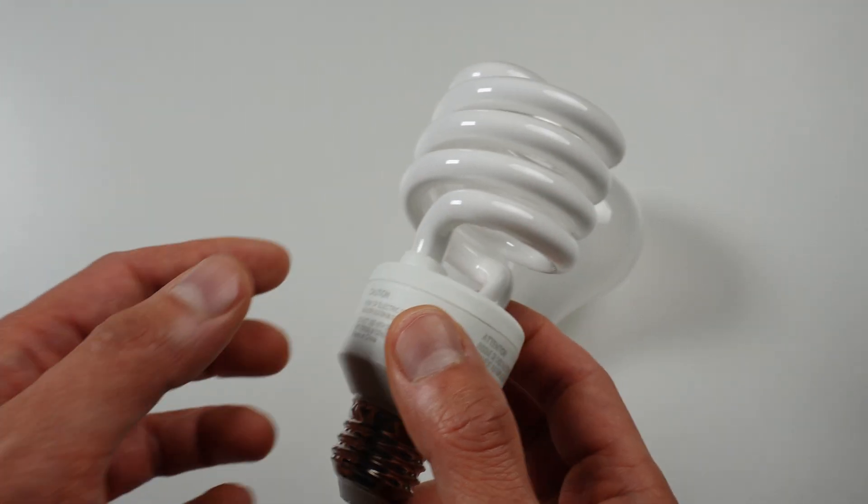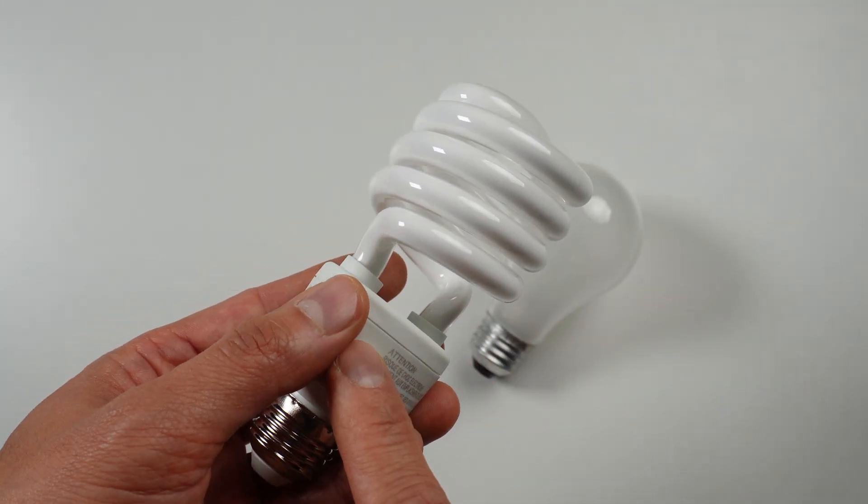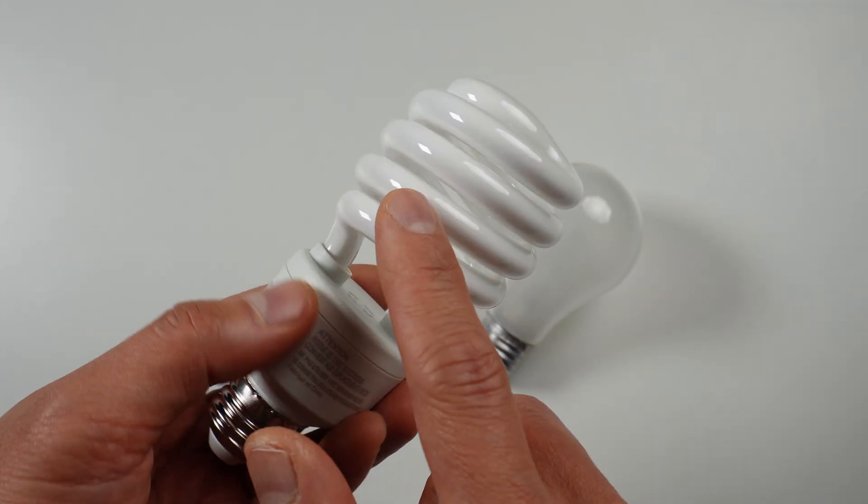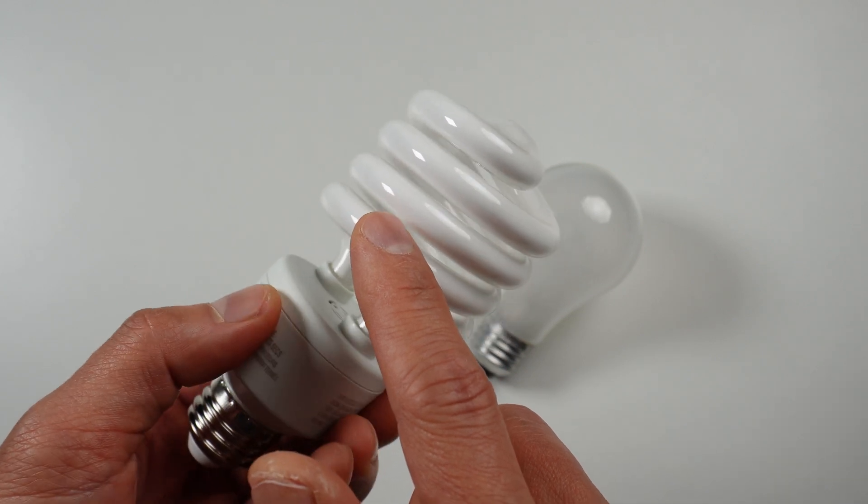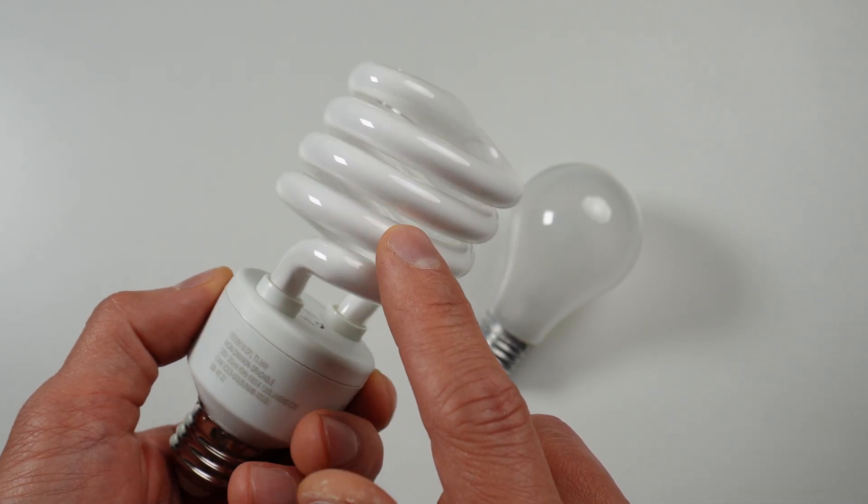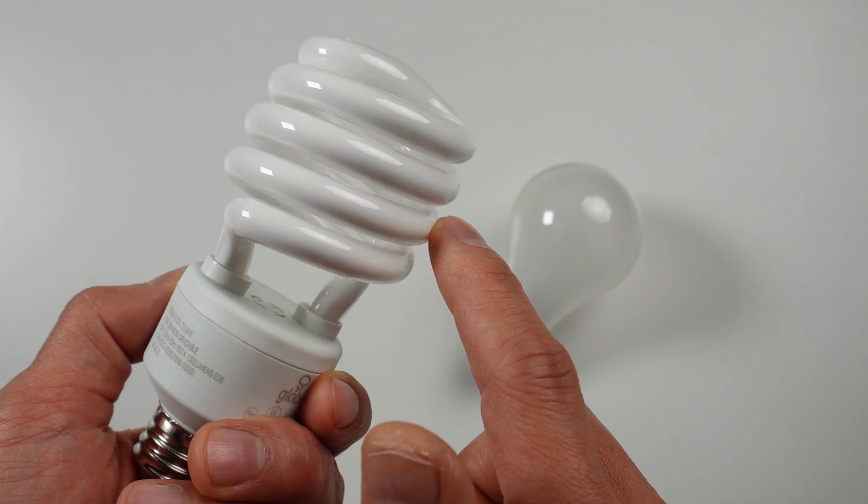When you turn on your CFL, it powers a ballast, which helps kickstart the bulb and then regulates the current once the electricity begins flowing through the glass tube, containing argon gas and a bit of mercury vapor.